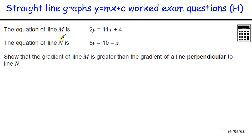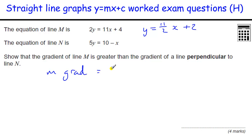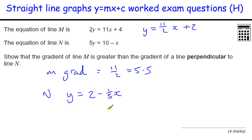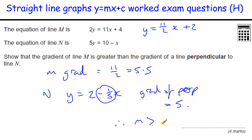The last question: show that the gradient of m is greater than the gradient of a line perpendicular to n. For m, dividing through by 2 to get 1y gives gradient equals 11 over 2, which is 5.5. For n, y equals 10 divided by 5 minus x divided by 5, so gradient of n equals 1 fifth. The perpendicular to n has gradient equal to the negative reciprocal of 1 fifth, which is 5. Therefore, gradient of m (5.5) is greater than gradient of the perpendicular to n (5).